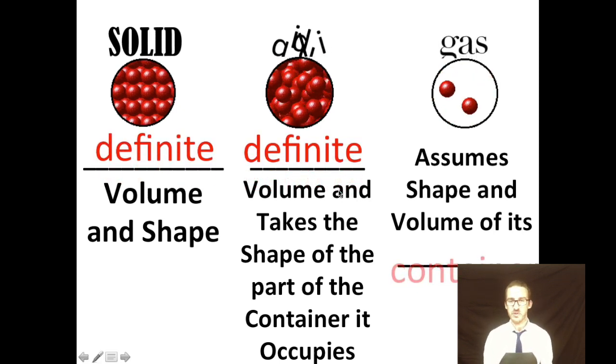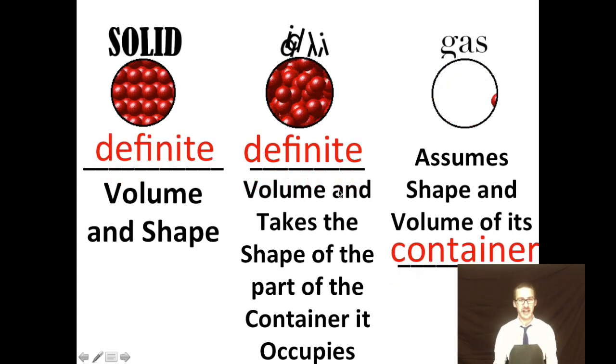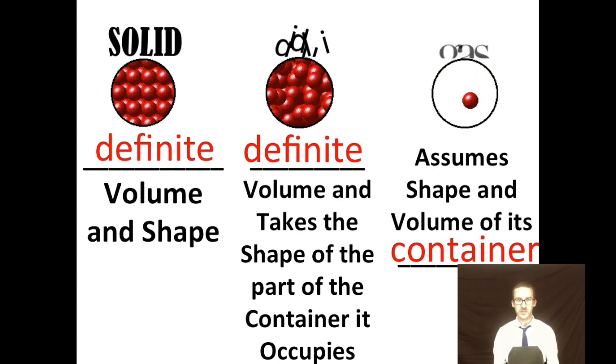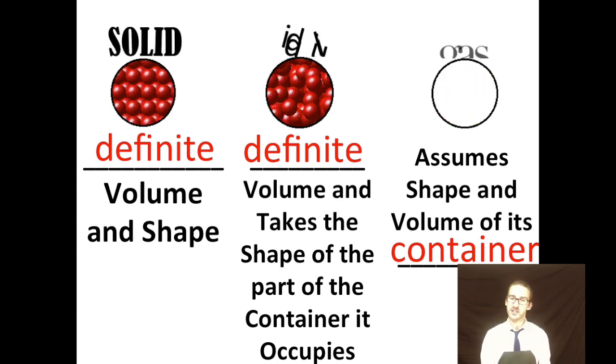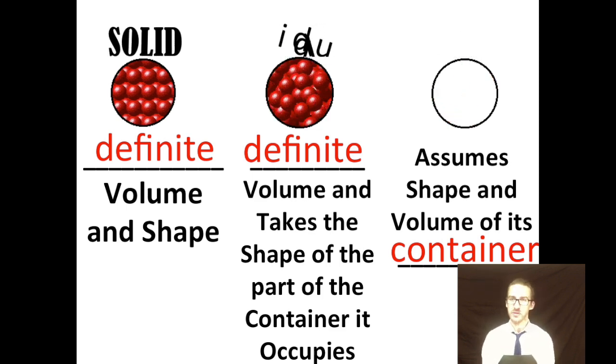Okay, so the first property, volume and shape. Solids will have definite volume and shape. Liquids will have a definite volume, but they take the shape of the part of the container that it occupies. And your gases, crazy, assume the shape and volume of its container.